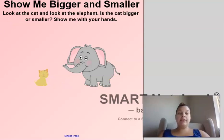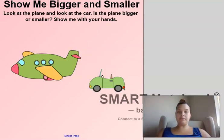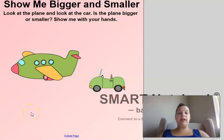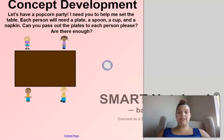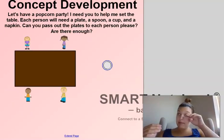Look at the cat and look at the elephant. Is the cat bigger or smaller than the elephant? The cat is smaller than the elephant and the elephant is what? Bigger than the cat is bigger than the cat. Look at the plane and look at the car. Is the plane bigger or smaller than the car? The plane is bigger than the car. So the car is smaller than the plane. Great job guys. I am impressed.